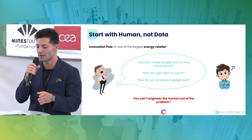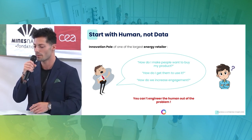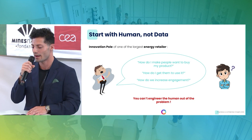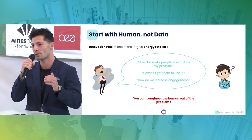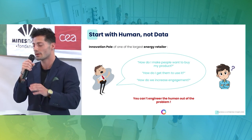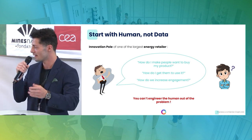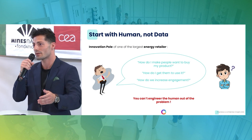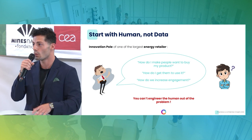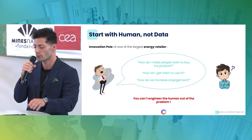We talked a few months ago with an innovation team of one of the largest energy retailers, and the first questions to come up were: how do I make people want to buy my product? How do I get them to use it? This was regarding a new product with a lot of features — meaning they spent months and a lot of money developing a product, and the questions at the end were: how do I make people want to buy it? We said: let's start from the beginning — why are you developing this product, and what are the desired behaviors you want to tackle? You can't engineer the human out of the problem.